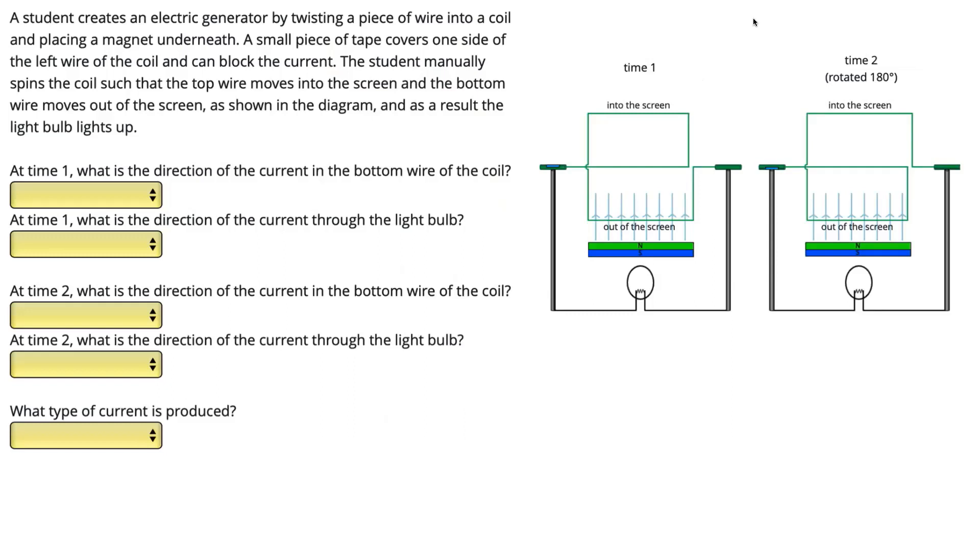In this problem, we have a student who's created an electric generator, shown here, by twisting a piece of wire into a coil and placing a magnet underneath, as shown in the diagram. There's a small piece of tape covering one side of the left wire of the coil. We can see it in blue here, and we can see it here. And that tape can block the current when it's in between two pieces of wire.